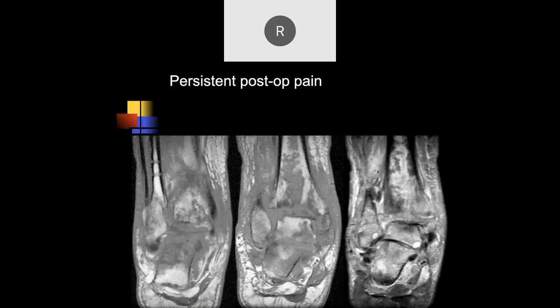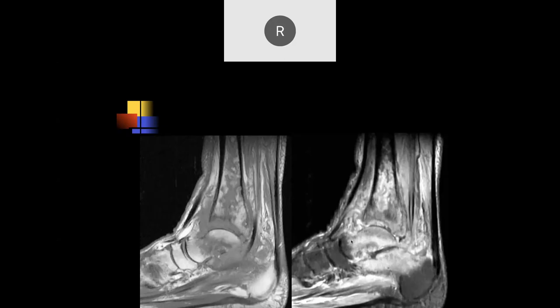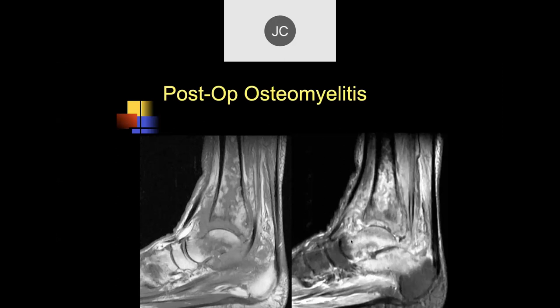A patient with persistent post-operative pain. There's irregular signal throughout the bones, a lot of destructive change, effusion and fluid collections, and looks like some hardware has been removed — concerning for post-op infection. This was a fracture, they put in internal fixation, it got infected, they had to remove it and treat the infection, then hope to salvage something after the infection is completely treated. This is what we call iatrogenic infection.